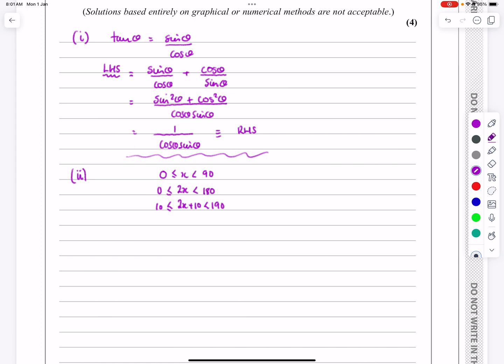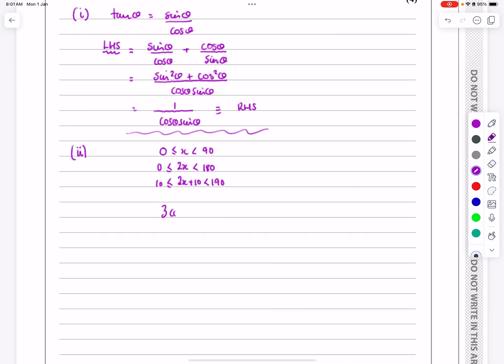Let's actually just start solving the equation here. We've got 3 cos squared 2x plus 10 is equal to 1. Well, this is just simple rearranging at this stage. So cos squared 2x plus 10 is equal to 1 third. So cos 2x plus 10 is going to be equal to plus or minus the square root of 1 third or 1 over root 3.